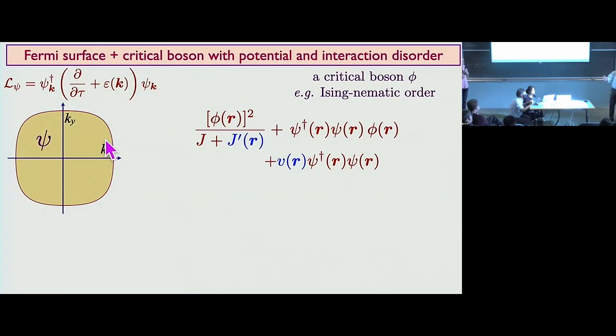We have to include randomness in J, and this is some evidence that there's random J. For a very short coherence length superconductor like this, the disorder has been magnified, but it's there. Okay, it was a great discussion. Thank you very much.